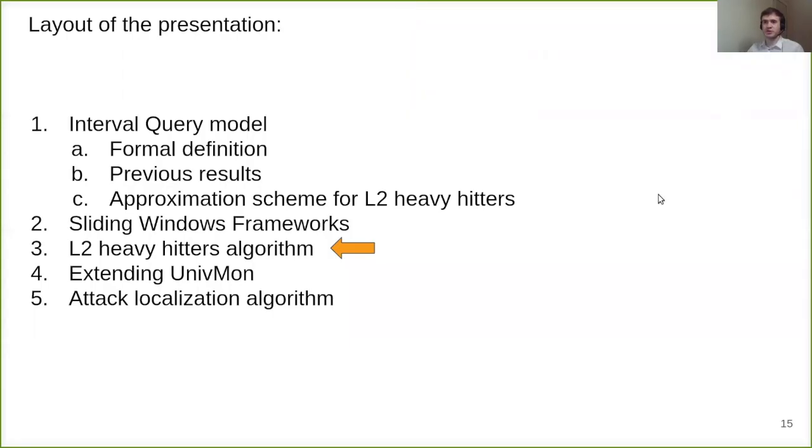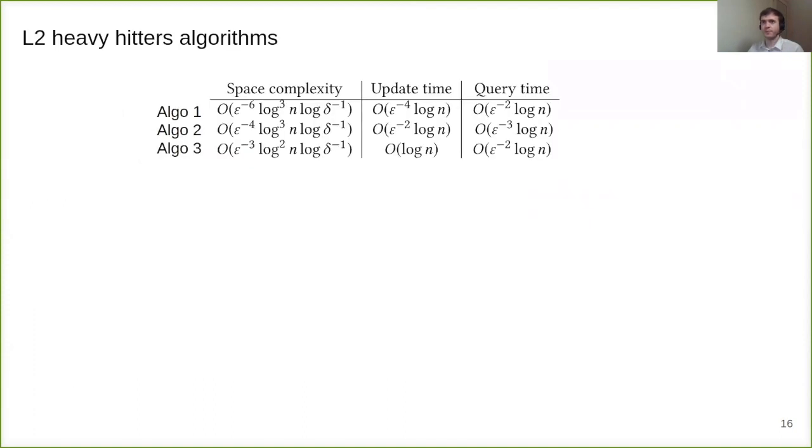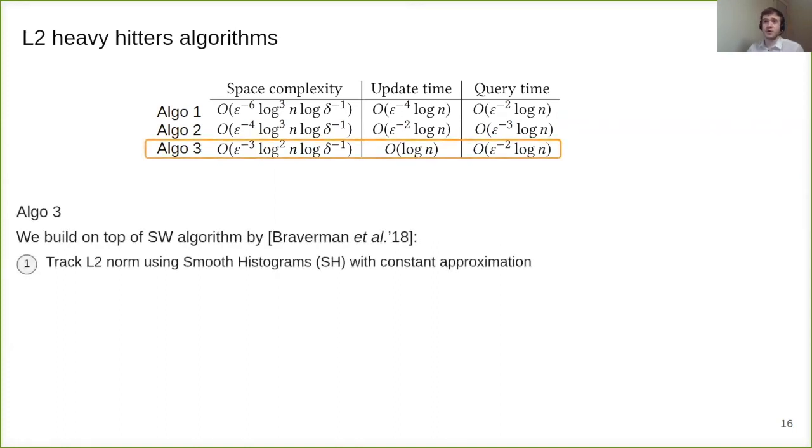Now we move to discussion of actual L2 heavy hitter algorithm in interval query mode. We actually introduced three algorithms based on different models for L2 heavy hitters and different sliding window frameworks. They have trade-offs. Algorithm one is better in query time but worse in update time compared with algorithm two. But algorithm three is best in all dimensions. So we'll discuss it here. Algorithm three builds on top of the sliding window algorithm by Braverman and colleagues from 2018.